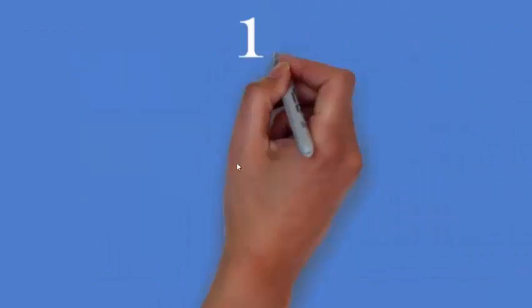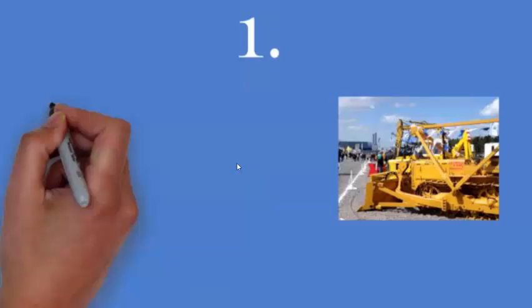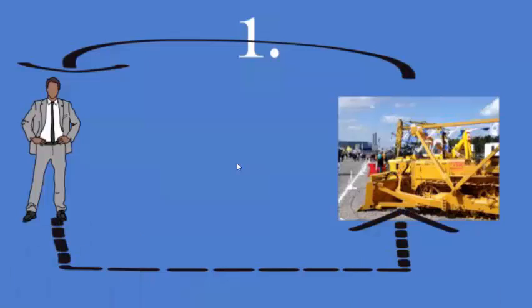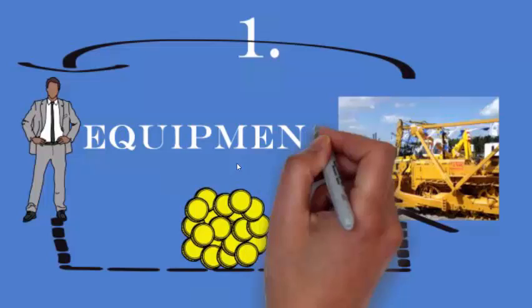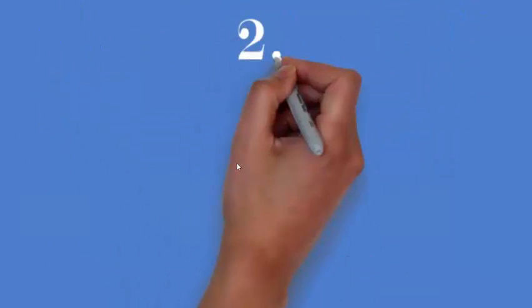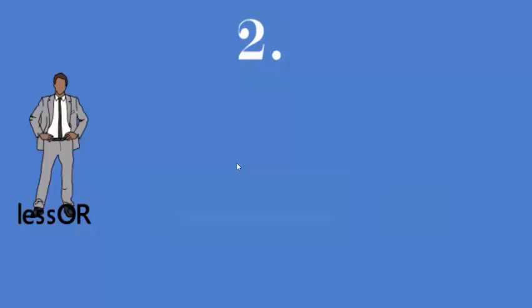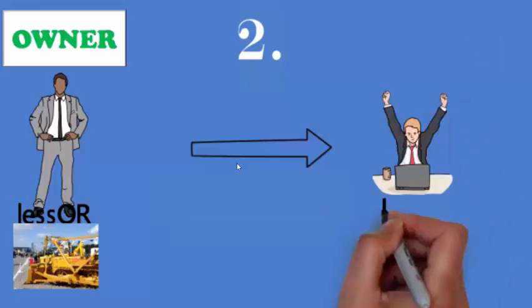What are the factors that the owner needs to consider? The first and most important factor is the cost of equipment. When the lessor is buying the equipment, he will pay the cost. He is the owner of the equipment, and he will give this asset for use by the lessee — that is, he will grant the right to use to the lessee.